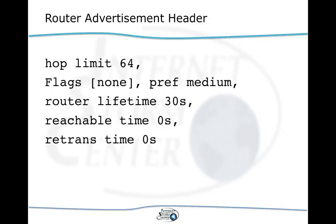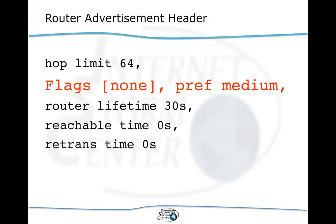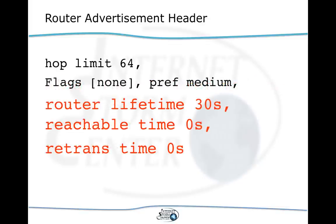In the router advertisement header, the hop limit is advertised — this is the hop limit the host will use for all outbound packets. Once a host sees this router advertisement, it will start with a hop limit of 64, which is the default. There are also flags and a router priority; if there are multiple routers, priority defines which is preferred. Various lifetimes and timers tell us how frequently to expect these messages and how long to keep using a particular router if we stop seeing them.